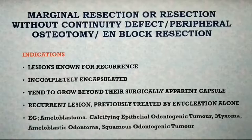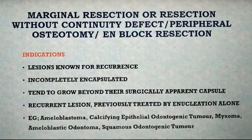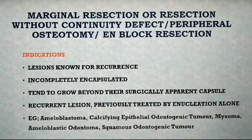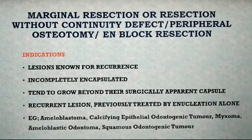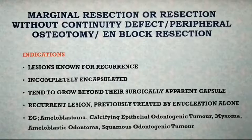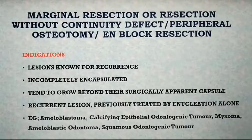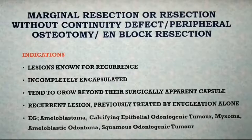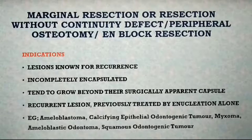A widely used surgical procedure is marginal resection, or resection without continuity defect. This means the inferior border of the mandible maintains its continuity — there is no breach or break in the lower border at any point. It is also termed peripheral osteotomy or en bloc resection. In this procedure, the tumor is removed along with a rim of uninvolved bone while maintaining the continuity of the jaw.